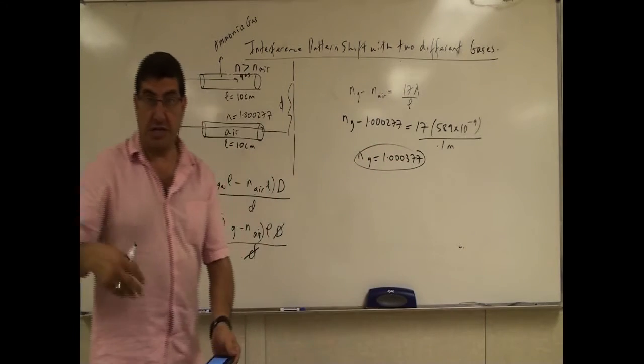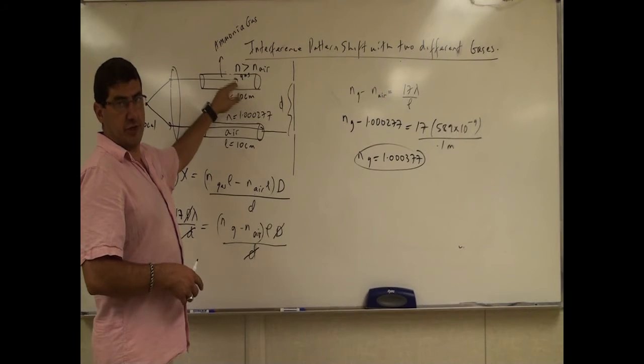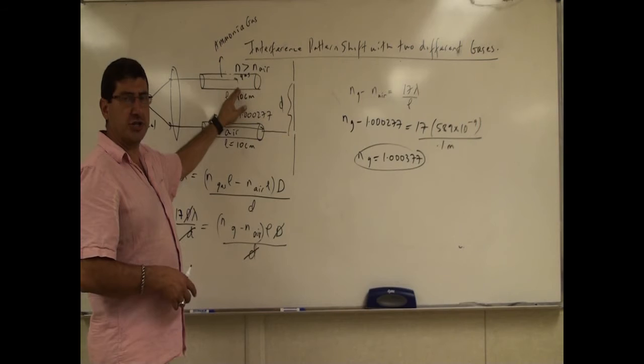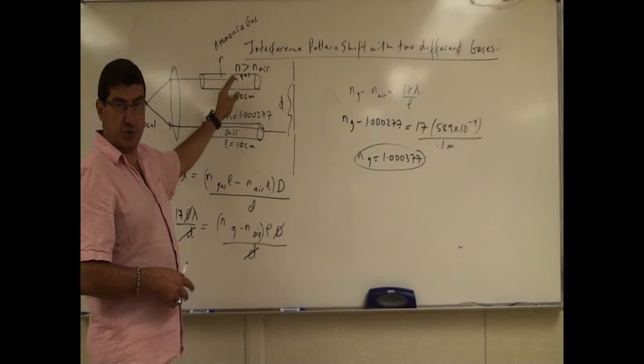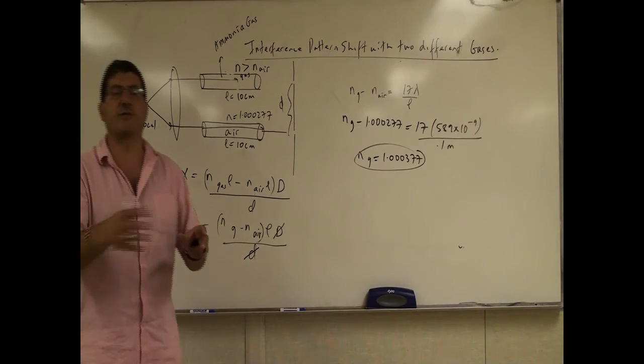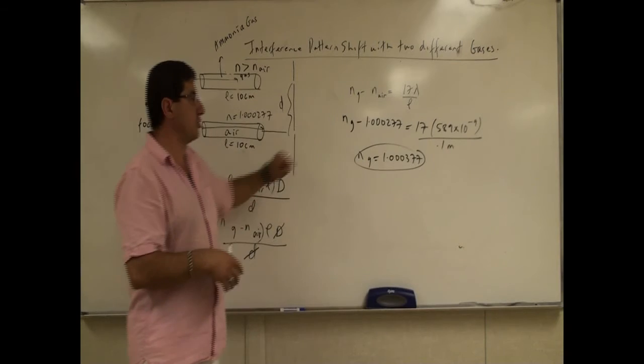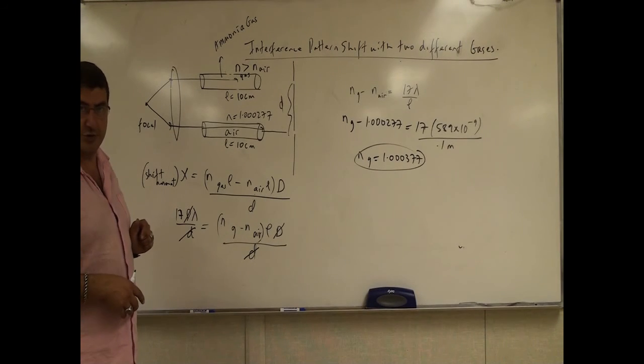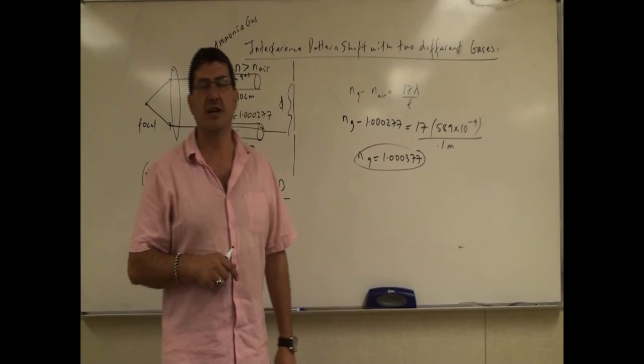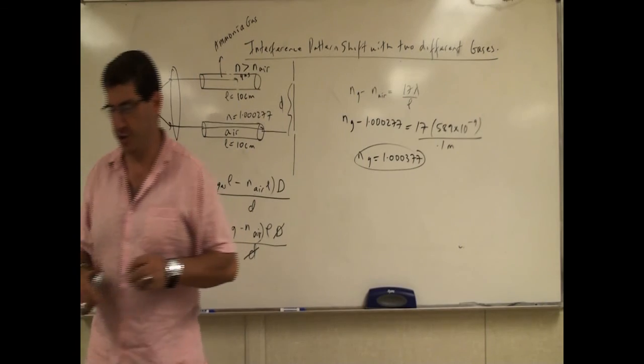And then you can keep doing this experiment. Keep this air. Take this out. Put it with a different gas. Carbon dioxide gas. Nitrogen gas. Oxygen gas. Pure oxygen. Nitrogen. Anything else. Helium. Hydrogen. And then you can perform this experiment. Keep doing it. Find out what the shift amount is. Use the same wavelength of light that you originally used. And then you could use this as an experimental method to calculate the index of refraction of a lot of different gases. Thank you very much.